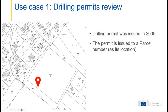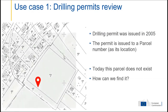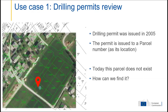For instance, we have a drilling permit. The drilling permit was issued in 2005 on a big meadow, and the permit was issued to a parcel number as its location. However, in the meantime, the farmer split the meadow up to make parcels for new houses. Now all those parcels have different parcel numbers. If we want to find this drilling permit, we cannot find the original parcel anymore. So we need an archive of geospatial records where those old parcels are stored.